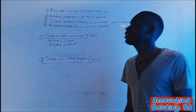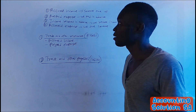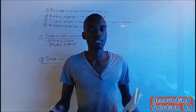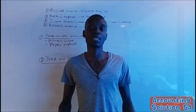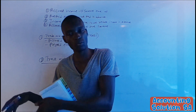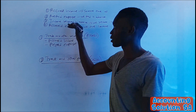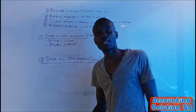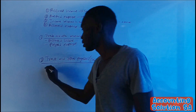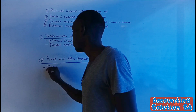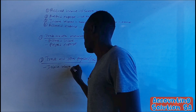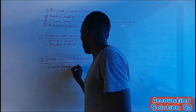For income received in advance, suppose we have a rental business and our tenant has paid rent for next year. That person can come and take that money back, which means we don't have full control over it yet. We have a liability to allow that person to stay next year, so income received in advance is a liability.